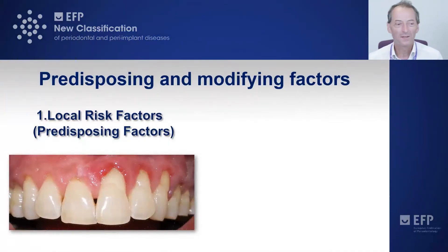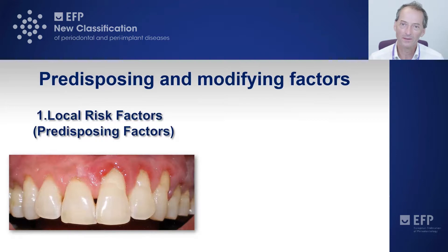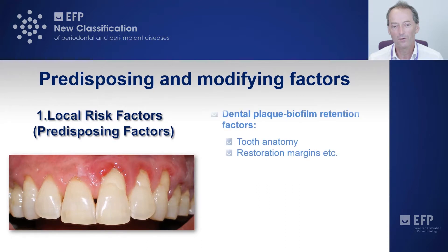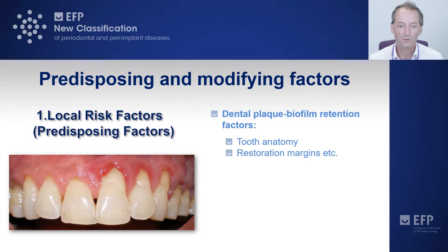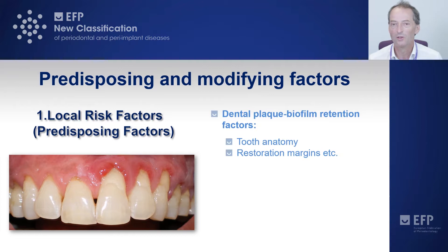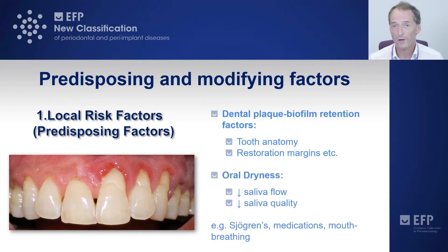When we looked at predisposing and modifying factors, we regarded the local risk factors as our predisposing factors. These are things that encourage the dental plaque biofilm to accumulate — such as various tooth anatomical factors or subgingival restoration margins that retain plaque below the gingival margin — and also oral dryness.